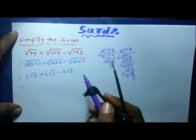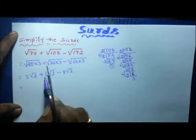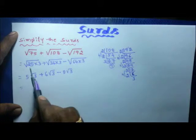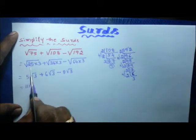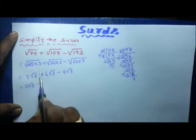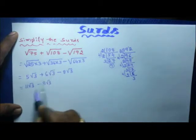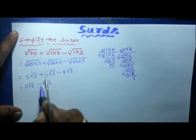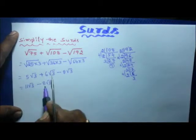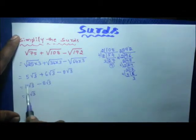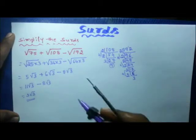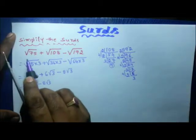Like surds can be added or subtracted. First add: 6 plus 5 is 11, so 11 times square root of 3. Then minus 8 times square root of 3. Since there is a minus, subtract: 11 minus 8 is 3. So the answer is 3 times square root of 3. This is the simplification of surds when square roots are given.